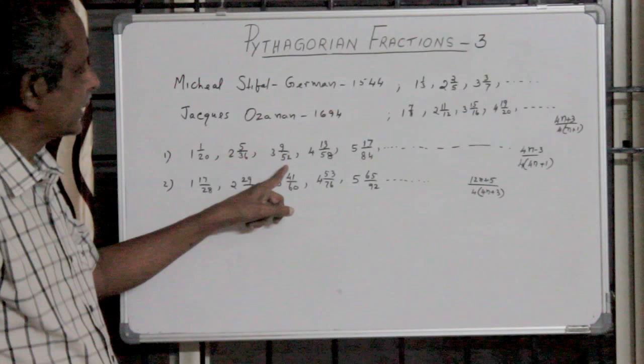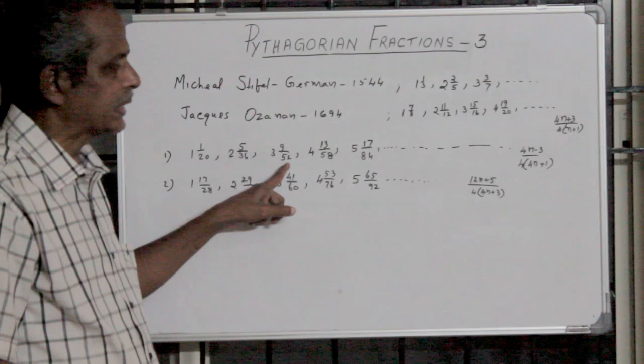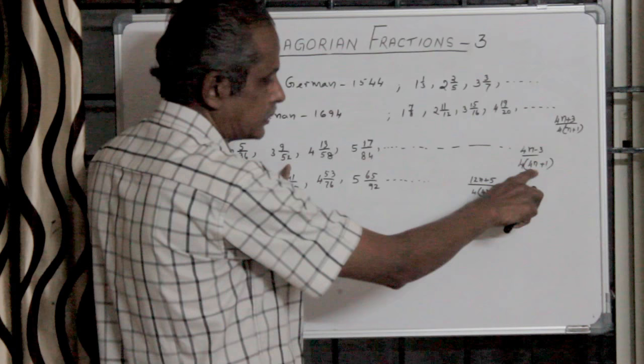Here 52 is the denominator when n is 3. Then 4 into 3 is 12, 12 plus 1 is 13, 13 into 4 is 52.